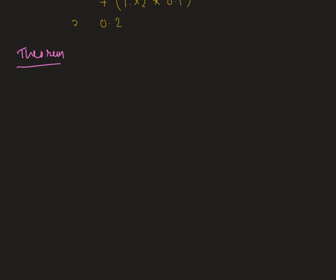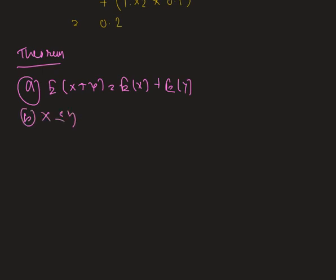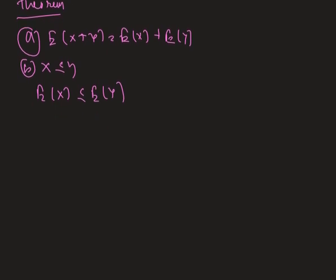The first theorem says that expectation of X+Y equals expectation of X plus expectation of Y. The next one says that if X ≤ Y, then expectation of X ≤ expectation of Y. So first we have to prove the first theorem.